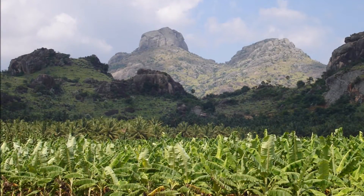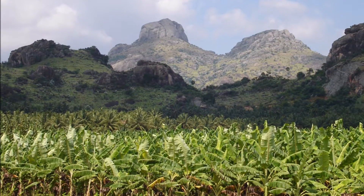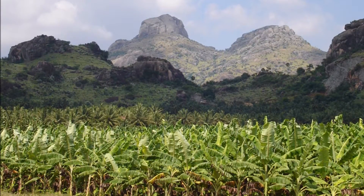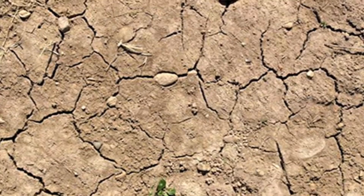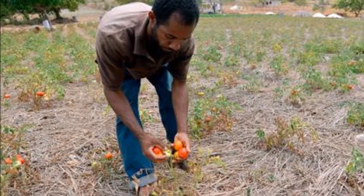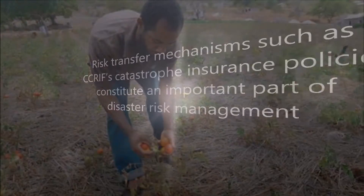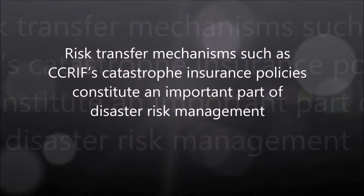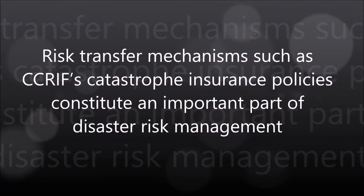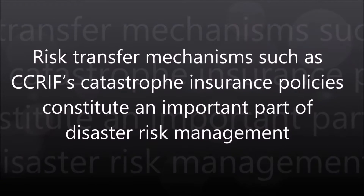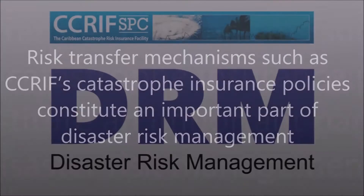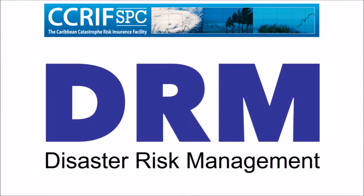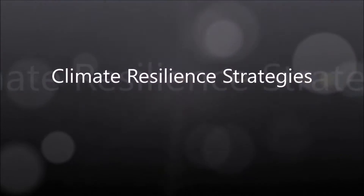In the near future, CRIF also will make available to its members parametric insurance products for drought and agriculture. It is clear that risk transfer mechanisms such as CRIF's catastrophe insurance policies constitute an important part of disaster risk management (DRM) and climate resilience strategies.